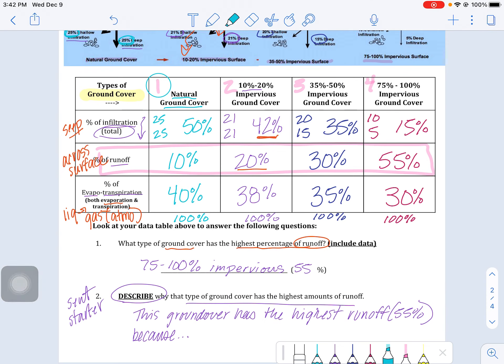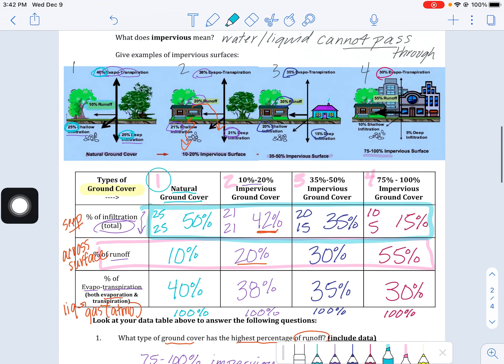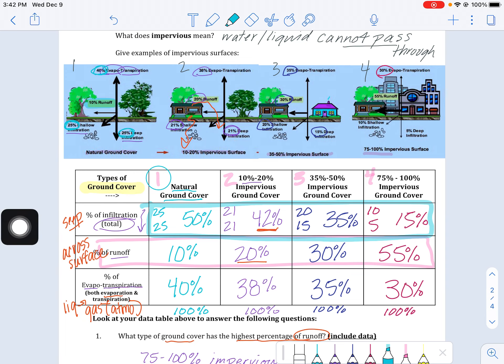In, let's see, the natural ground cover state. So again, looking at the picture, why is this the most infiltrated area compared to these other environments?